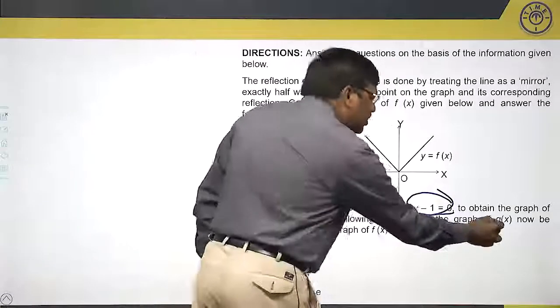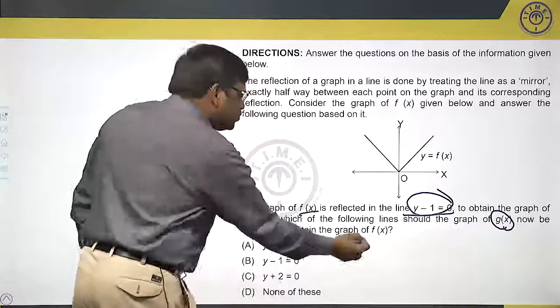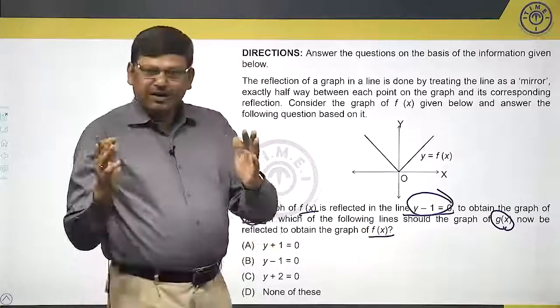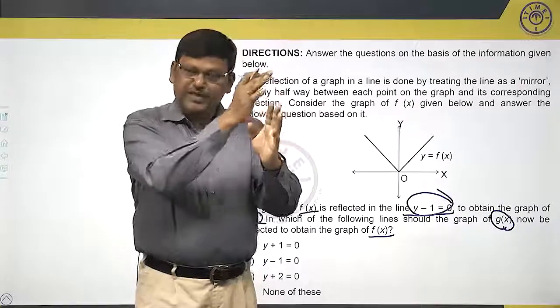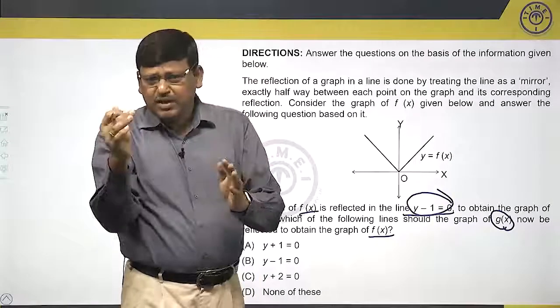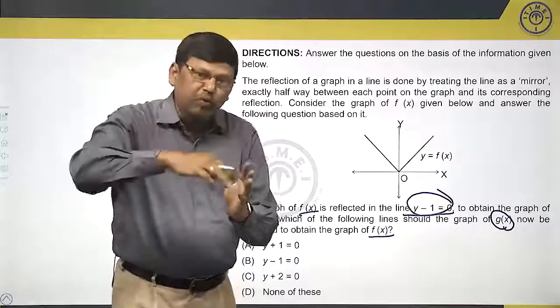Now, what mirror or what line should I take for g(x) to obtain f(x)? See, from f(x) by taking a line, you got g(x). From g(x) again, if you have to get f(x), that means you are trying to undo what you have done.